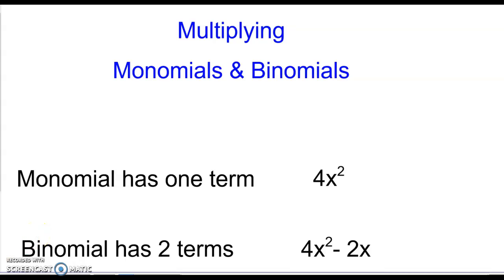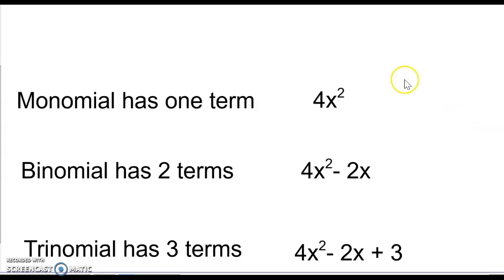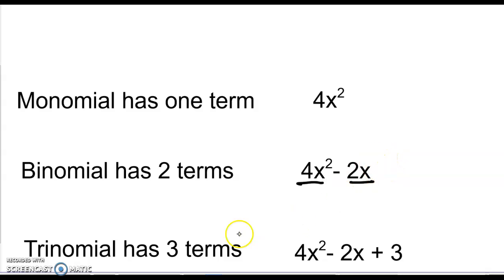A monomial has one term, like 4x squared. A binomial has two terms: 4x squared and 2x. A trinomial has three terms: the first term, the second term, and 3 is your third term. We're going to work with multiplying all of these.